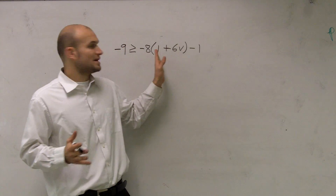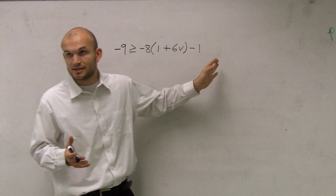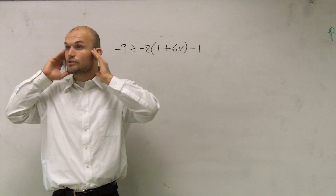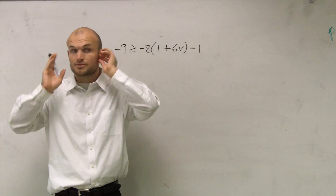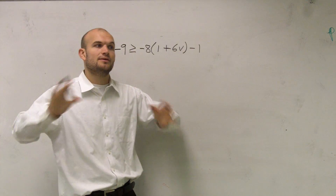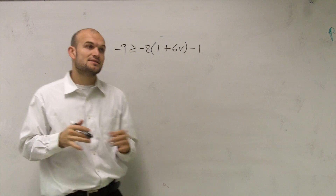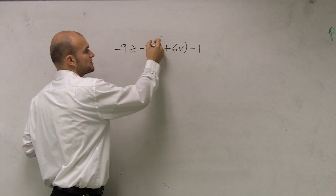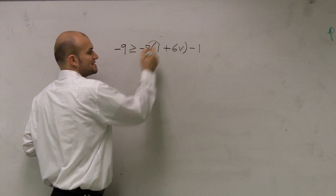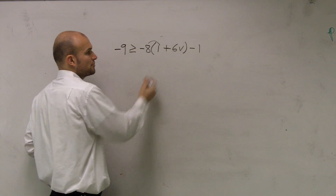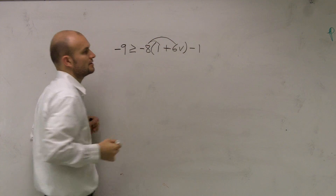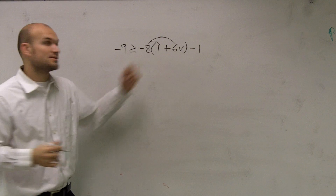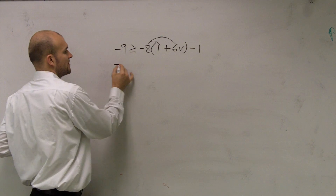Now remember, whenever you guys see parentheses, you should automatically think distributive property. You can do the distributive property and at least simplify the problem. Remember, the distributive property states that any number outside your parentheses means to multiply times every term inside the parentheses.